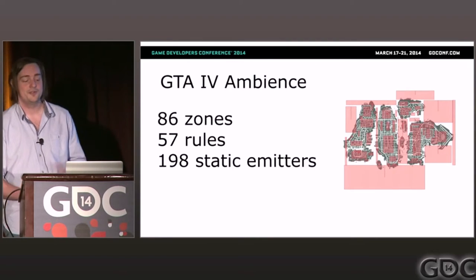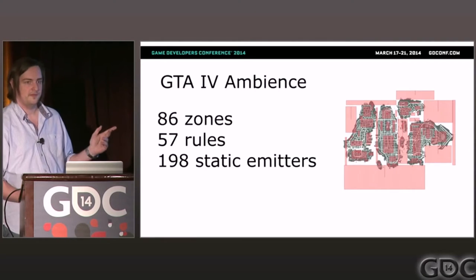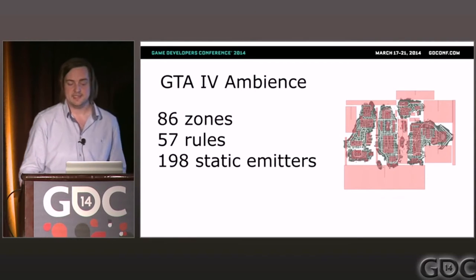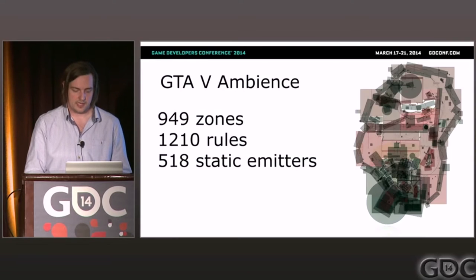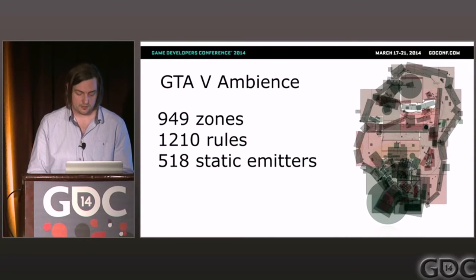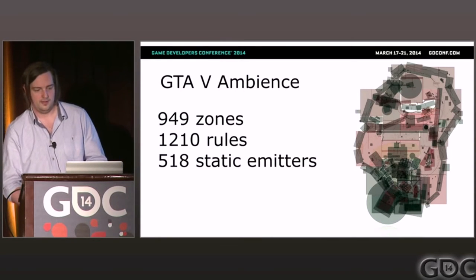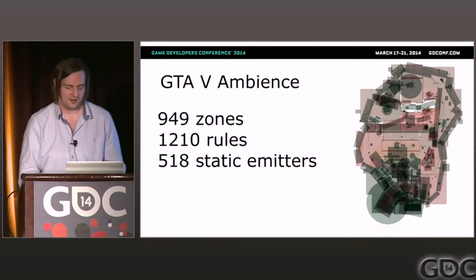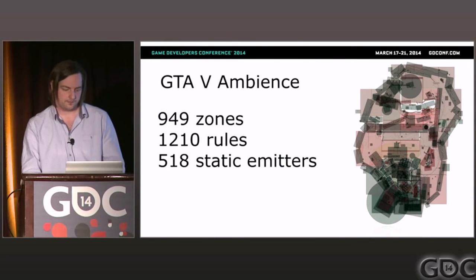Our overall approach in GTA4 was really similar — that's the map on screen. We created 86 zones, 57 rules, about 200 emitters. You can probably guess where this is going. We created a lot more in GTA5 — safe to say we had to optimize a lot of systems to enable that growth.